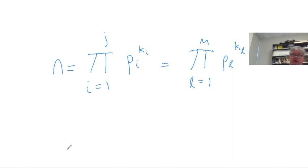So the only way that could fail to happen is if we can get a prime q, say, which is in one prime decomposition but not in the other. But that means then that we're going to have q times a prime is going to divide some number, which is going to be a product of primes.